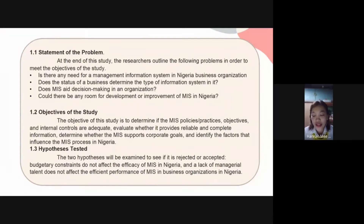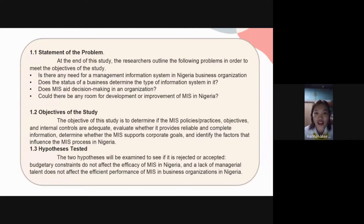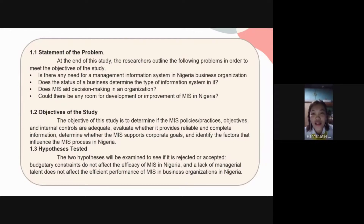For the statement of the problem, the researchers outline the following problems in order to meet the objectives of the study. First, is there any need for a management information system in Nigeria business organization? Second, does the status of a business determine the type of information system in it? Third, does MIS aid decision making in an organization? And lastly, could there be any room for development or improvement of MIS in Nigeria?